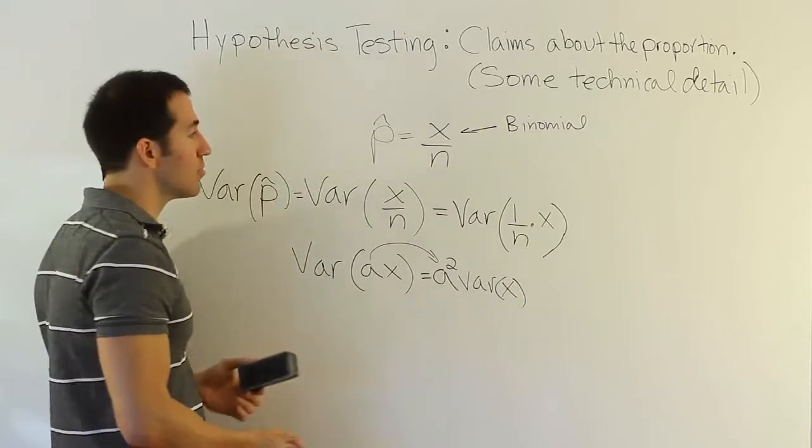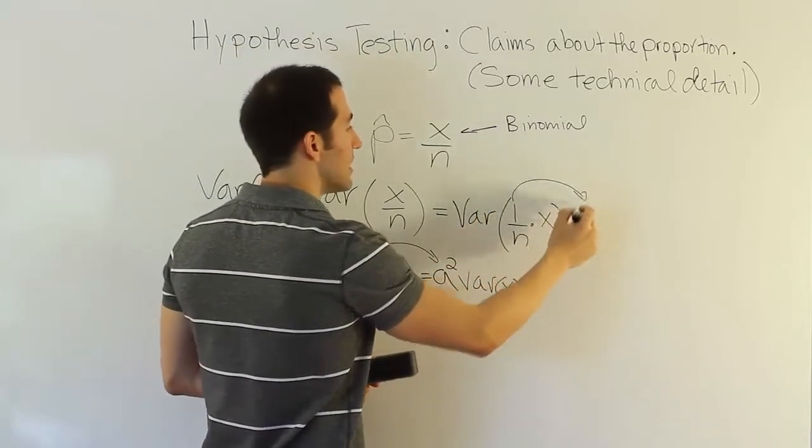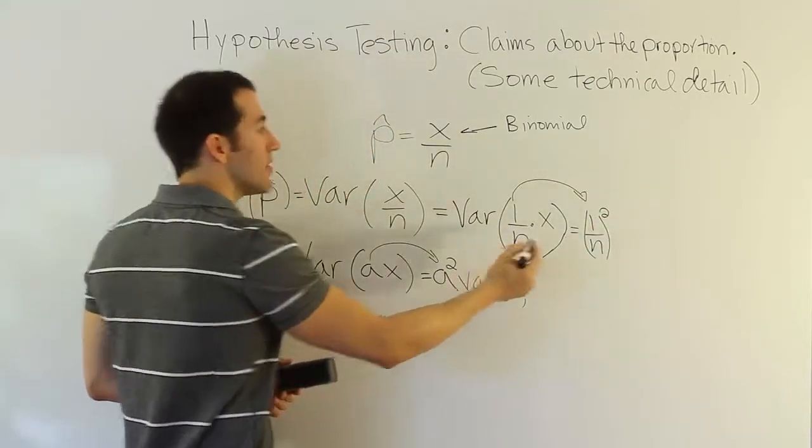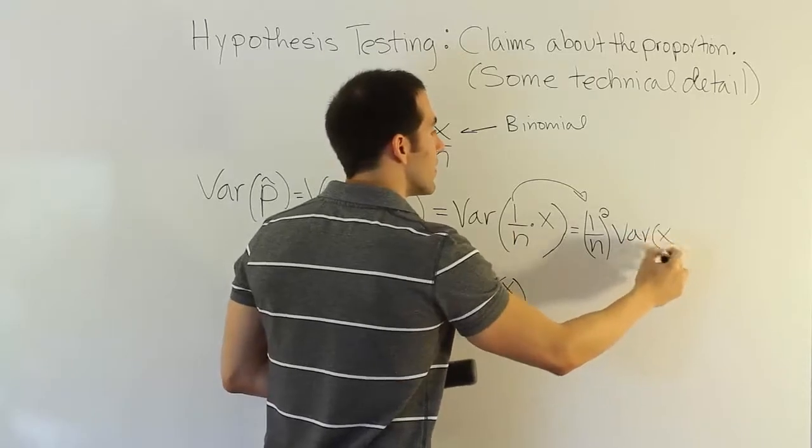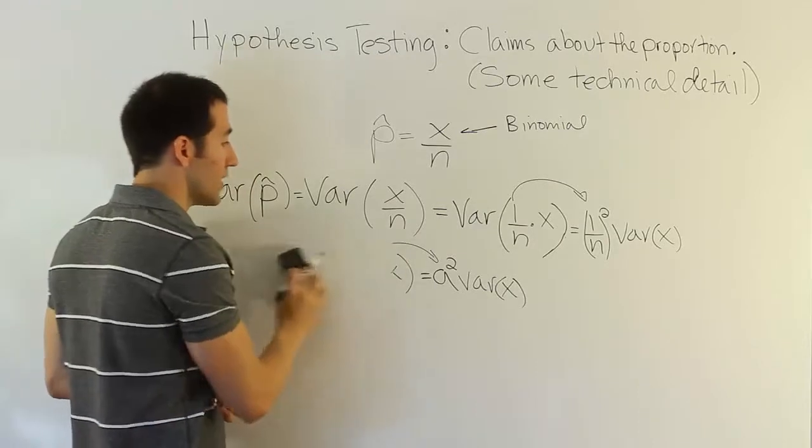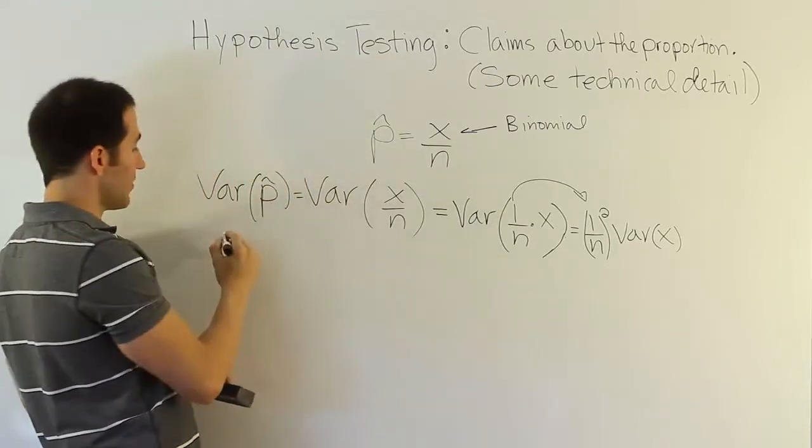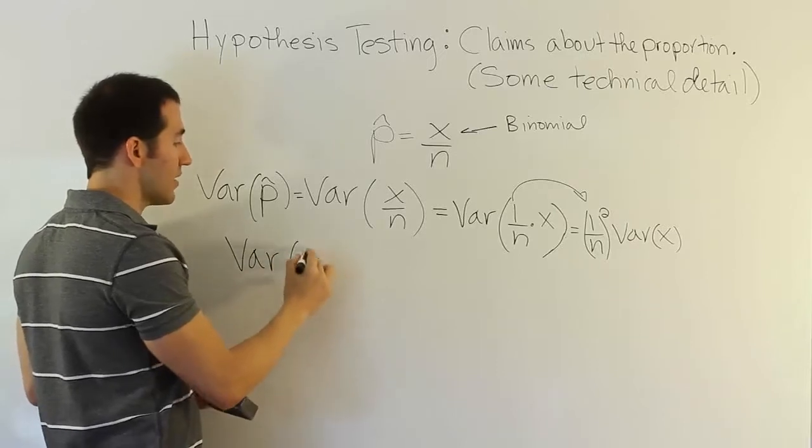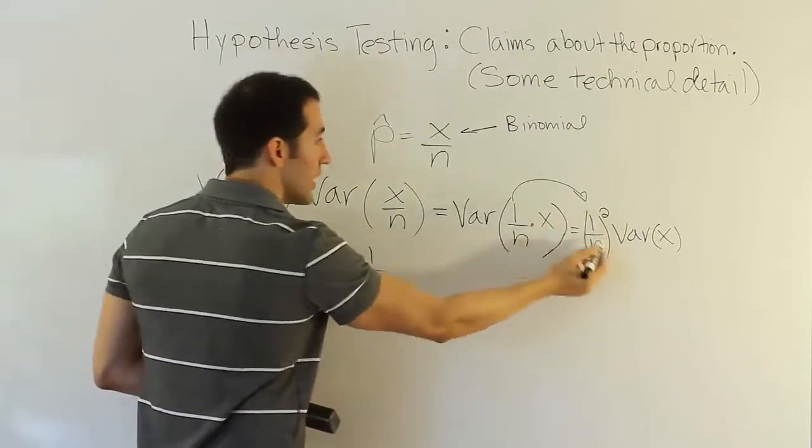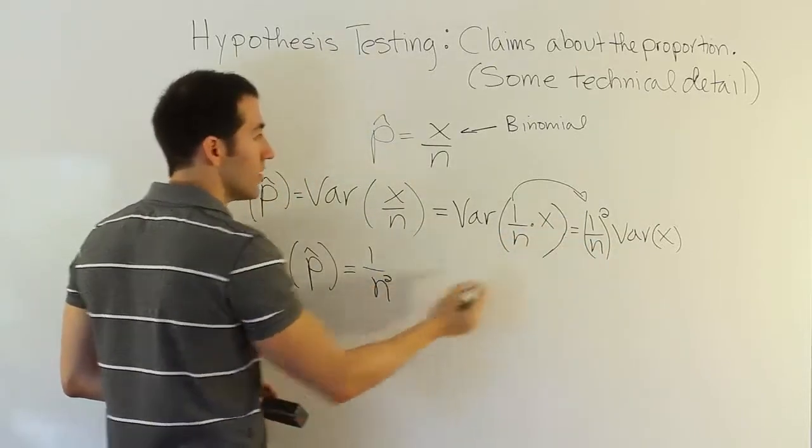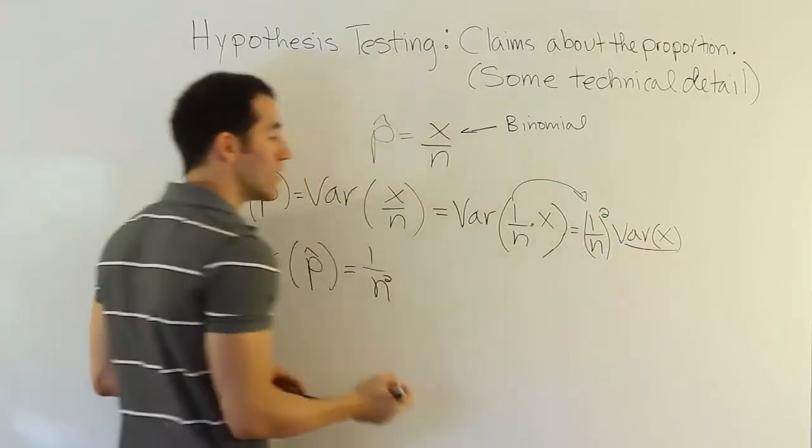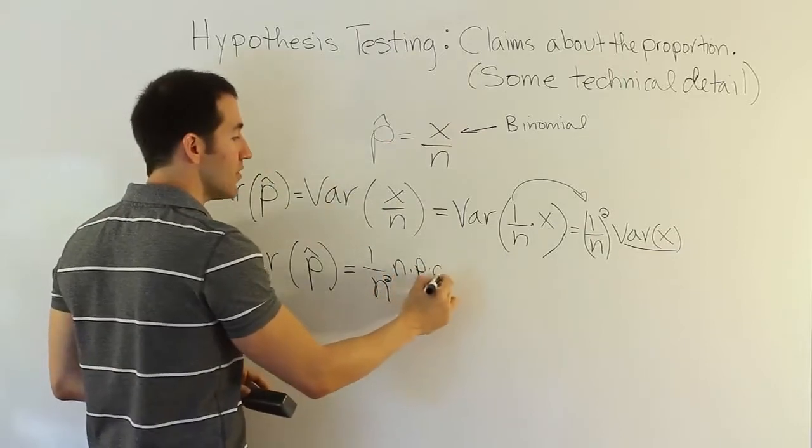Because if we know that, then we can apply that rule here. We can say the variance is going to be basically 1 over n squared times the variance of x. Well, x is a binomial random variable, so we just discussed its variance. We know what it is. So let's go ahead and finish then by saying the variance for p-hat is essentially the same as 1 over n squared. Because if you square 1 over n, you get 1 over n squared. Times the variance of x, and we learned that the variance of x was n times p times q.